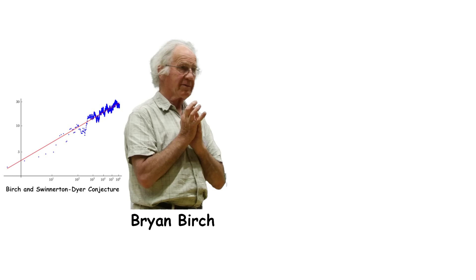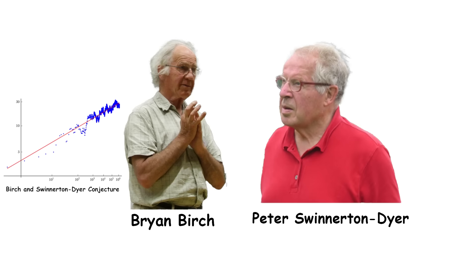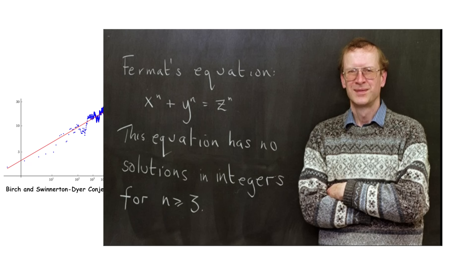British mathematicians Brian Birch and Peter Swinnerton-Dyer developed their conjecture in the 1960s. Its exact statement is very technical and has evolved over the years. One of the mathematicians who has worked on refining and understanding this conjecture is Andrew Wiles, who's famous for proving Fermat's last theorem.